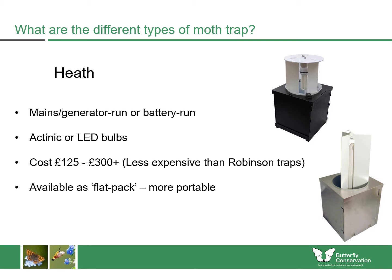The second trap is the heath trap. This is generally a cube with a funnel, light, and baffle arrangement. Sometimes the main body is all welded together, but you can get versions that clip together, making them much more portable and easier to store. Like a Robinson, they can be run off the mains, a generator, or if using an actinic or LED bulb, off a battery. The heath trap is generally fitted with either an actinic or LED bulb, making it more economical to run. These traps can be much cheaper to buy, starting at around £125 and going up to over £300. It is a popular trap with good catches.